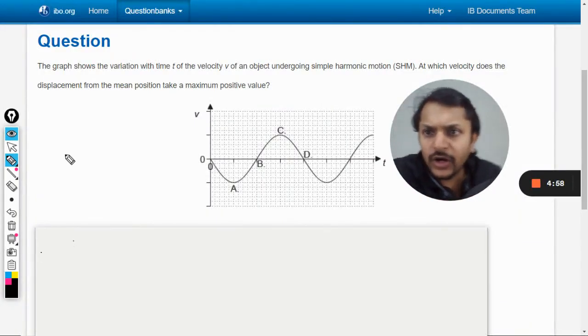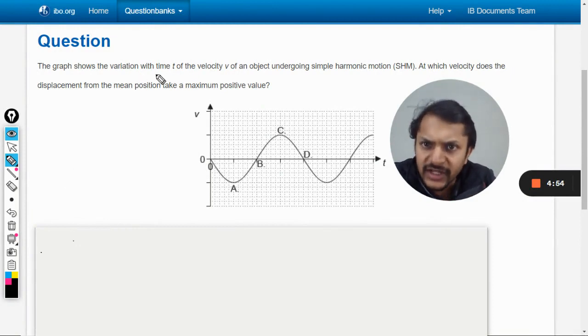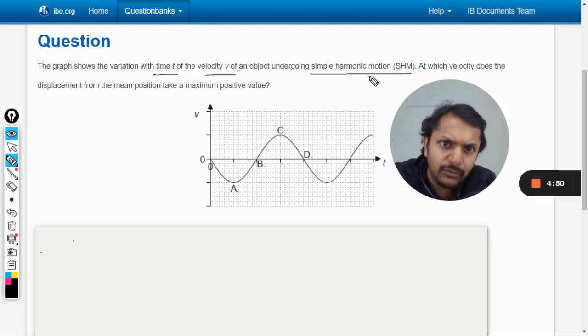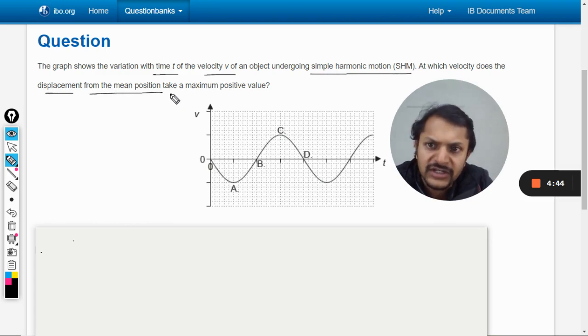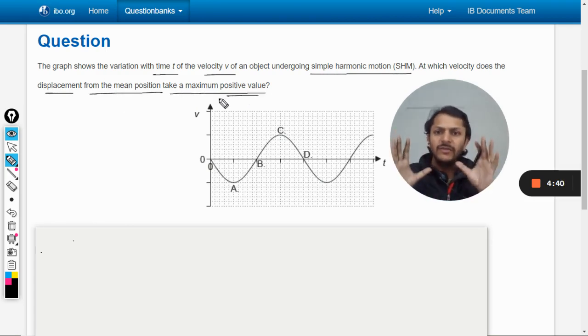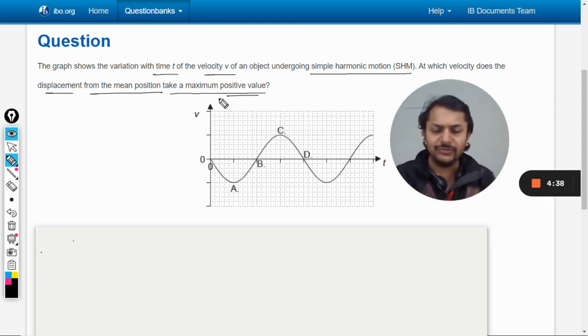Okay dear students, let us see how we're going to do this question. The graph shows the variation with time t of the velocity v of an object undergoing simple harmonic motion. At which velocity does the displacement from the mean position take a maximum positive value? So first of all we must understand the question properly.